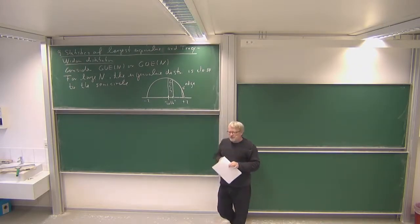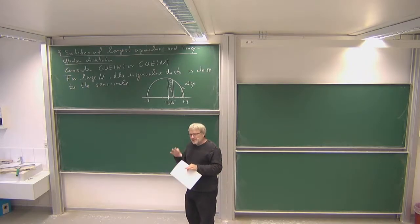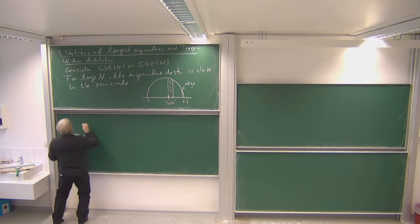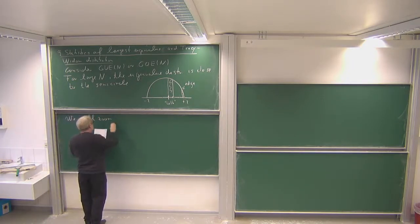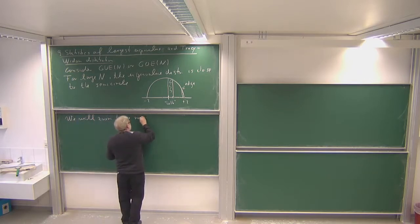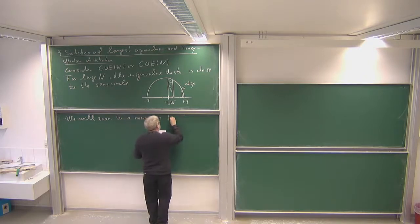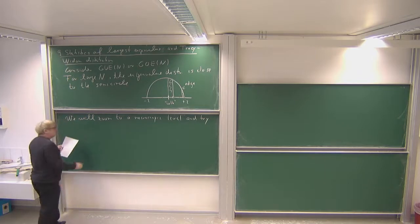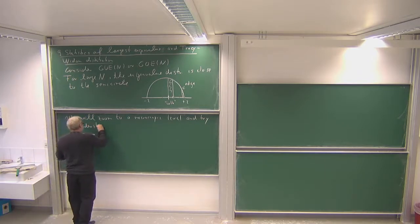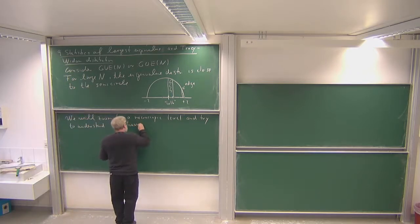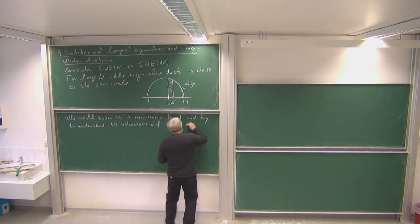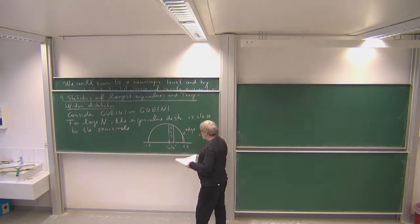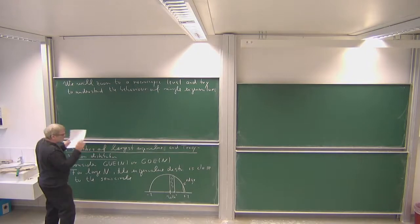I'm not saying proof, because to really prove all the details is very tough. But we want to get some idea of what is behind this. In particular, we want to at least see that the largest eigenvalue really converges to 2. We will zoom to a microscopic level — a level where you see single eigenvalues, not just the average over eigenvalues of order n — and try to understand the behavior of single eigenvalues. The behavior in the bulk and at the edge is different, but we only talk about the edge and the largest eigenvalue.